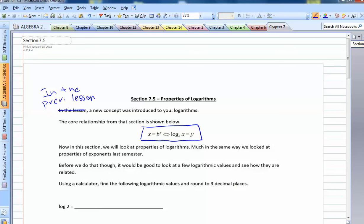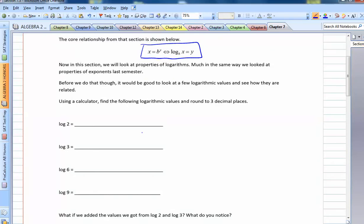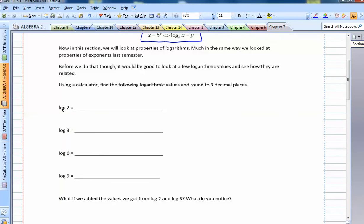Before we do that, though, what I want to do is I want to look at a few logarithmic values and see how they're related. Obviously, we're going to use a calculator. Find the following logarithmic values and round to three decimal places. So here we have log 2, log 3, log 6, and log 9.